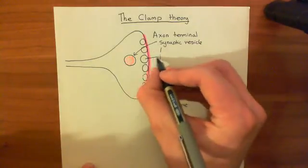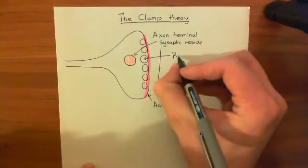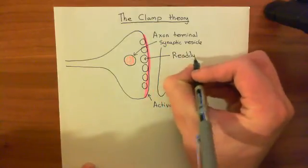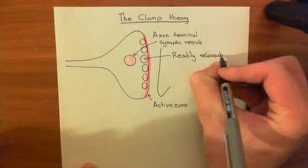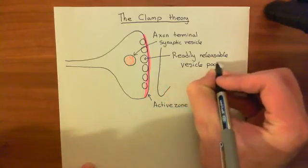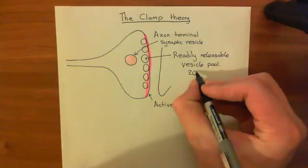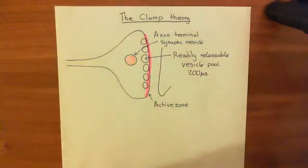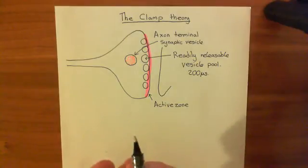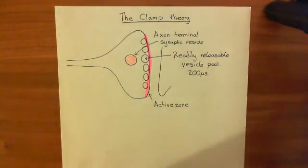These vesicles which are docked at the active zone are known as the readily releasable vesicle pool. They're called that because when the action potential arrives at the axon terminal, they will be released very, very quickly — within 200 microseconds of the action potential arriving. So we want to discuss how we dock vesicles at the active zone, and how an action potential causes them to fuse, and what stops them from fusing prior to that.